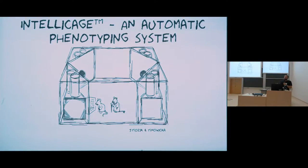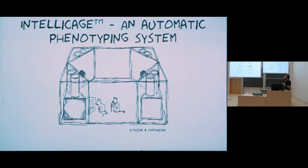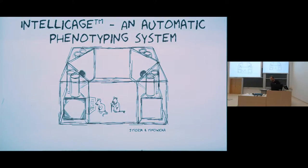For example, experiments performed by men yield, in the case of mice, slightly different results than when the experimenter is a woman. Observer bias is also very often mentioned. As a countermeasure for such issues, automated phenotyping systems like IntelliCage have been proposed.